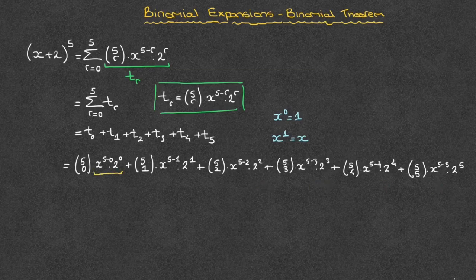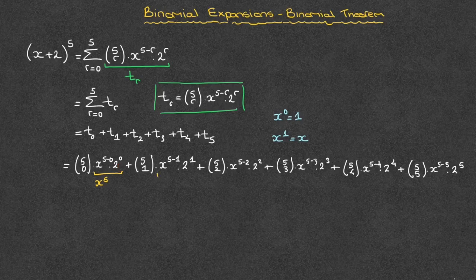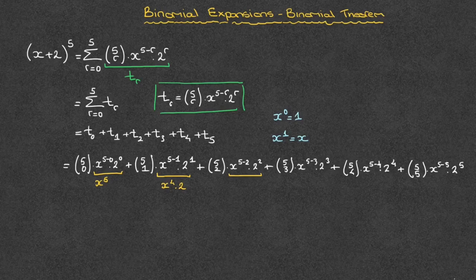The first term has x to the power of 5 minus 0 times 2 to the power of 0. That's x to the power of 5 times 2 to the power of 0, which equals 1, so we can just ignore this 2 to the power of 0. The next term has x to the power of 5 minus 1 times 2 to the power of 1, which turns into x to the power of 4 times 2. The next term has x to the power of 5 minus 2 times 2 squared, which simplifies to x to the power of 3 times 2 squared, which is 4.